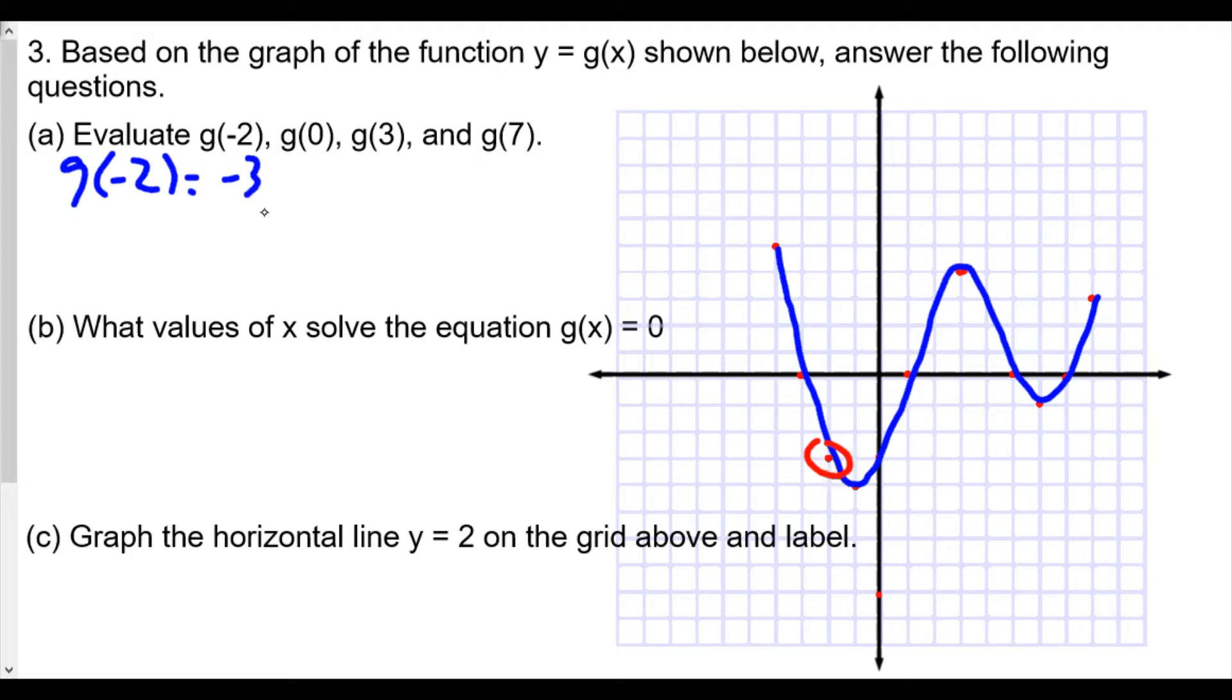g of negative 2 is equal to negative 3. So again, whenever they give you the function of the number, that means you're looking for the value of the y value when x is a number plugged in. So the matching coordinate would be negative 2, negative 3 on the graph.